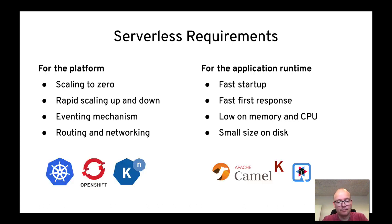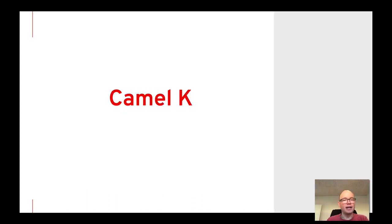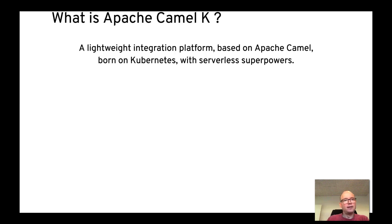Here are the products that deliver all that. On the platform side we're talking about Kubernetes, OpenShift and Knative, but on the application side I'm really proud to say that we have Camel K and Quarkus that can deliver those requirements with Java technologies. Camel K is lightweight integration based on Apache Camel, born on Kubernetes with serverless superpowers. It runs on vanilla Kubernetes, but you can also run it on OpenShift, and you get the best of it if you have Knative.